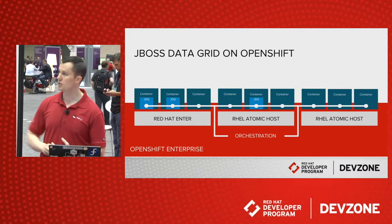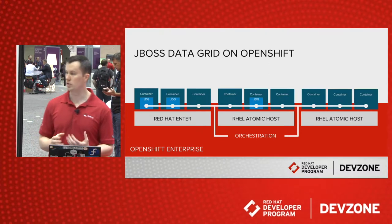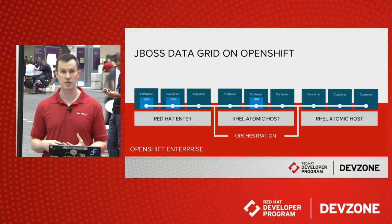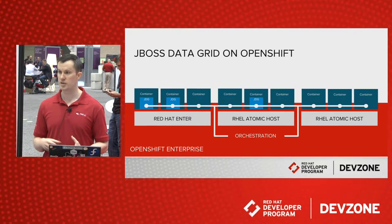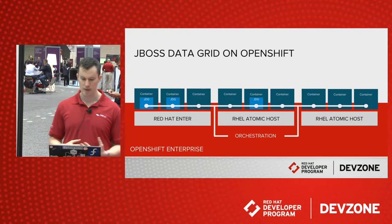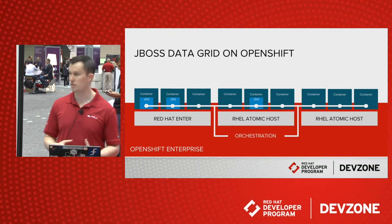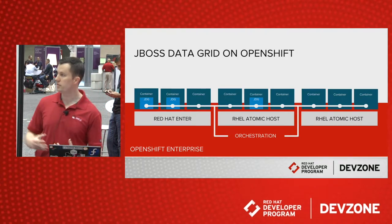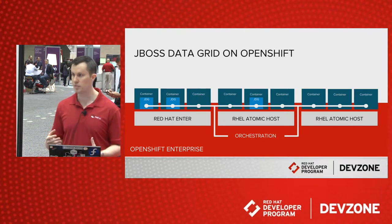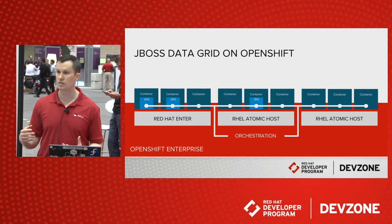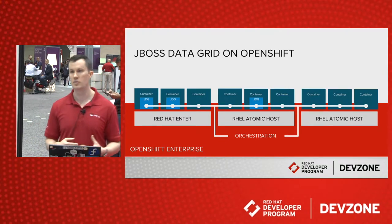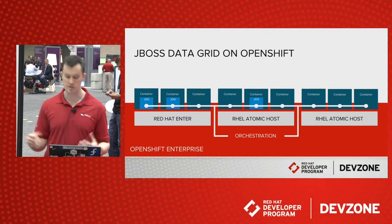On OpenShift, what this would look like is you go into the OpenShift service catalog and quickly spin up JBoss Data Grid instances. They automatically find each other and cluster to each other, and they'll be spread out across different containers across multiple nodes. Those nodes can be bare metal, OpenStack, virtual machines, or public cloud — it doesn't really matter to JBoss Data Grid. They'll just evenly disperse throughout the cluster.